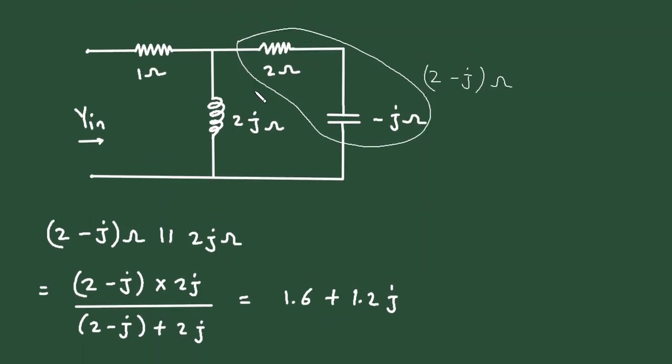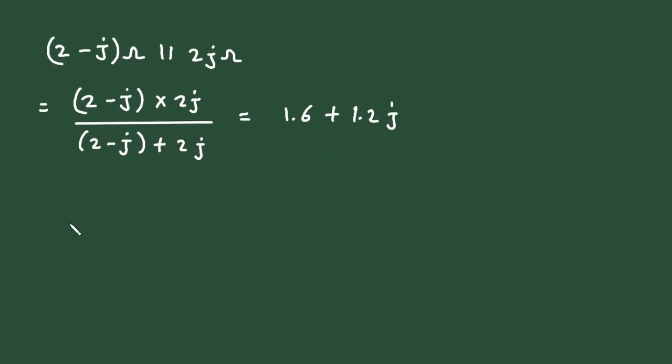Now it is in series with 1 ohm. So this will be added with 1 ohm. This is the total impedance: 1 plus 1.6 plus 1.2j. And therefore, Z equals 2.6 plus 1.2j. And it is an impedance, so its unit will be ohm.